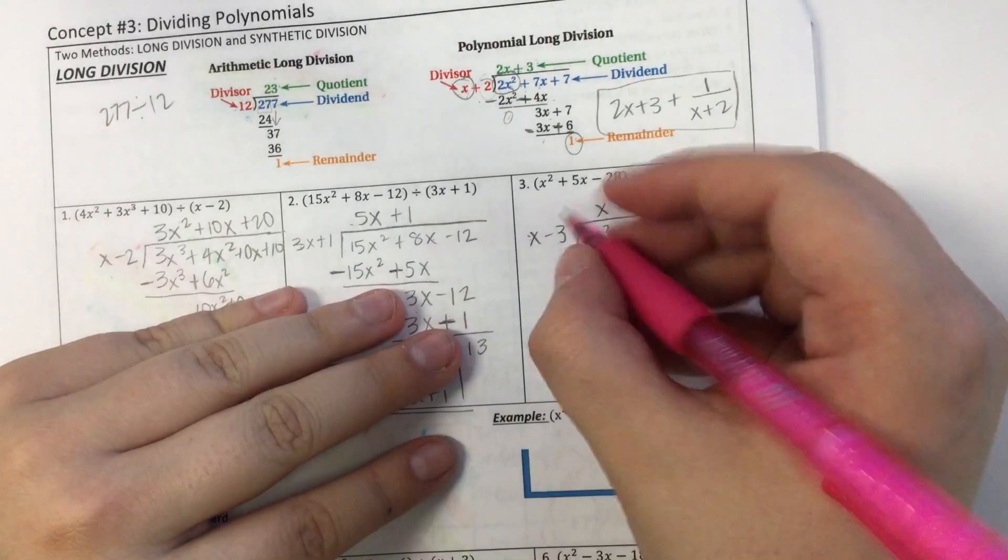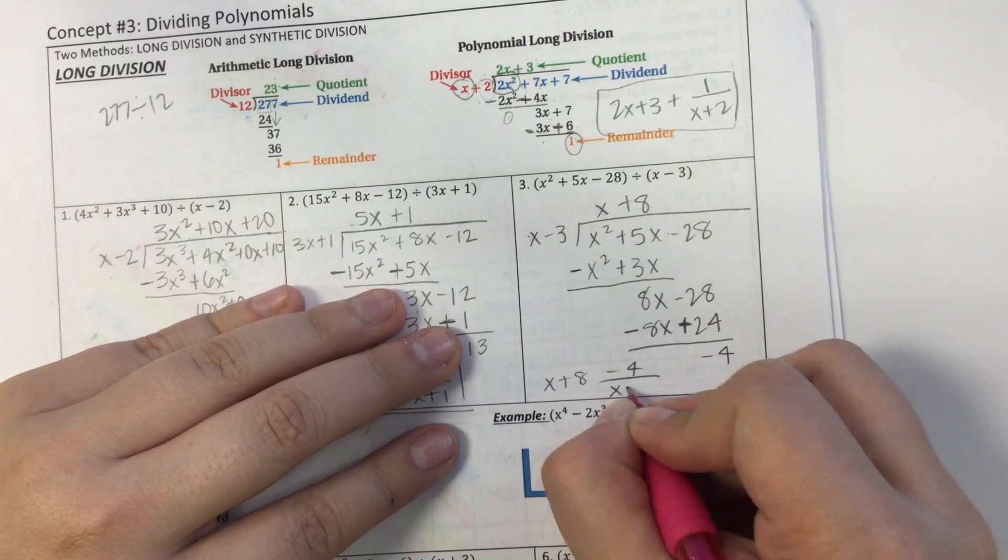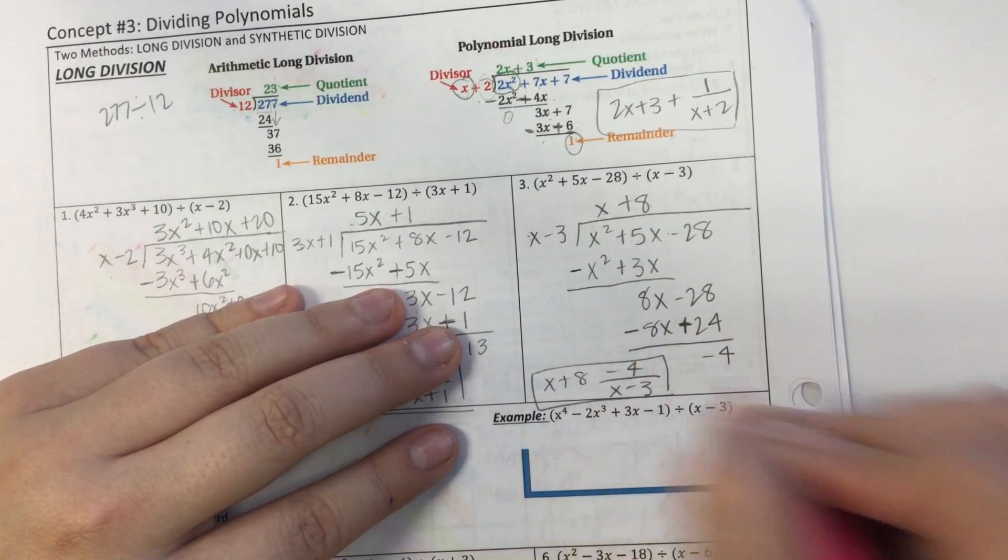So my whole answer is x plus 8 minus 4 over x minus 3. And that's it.